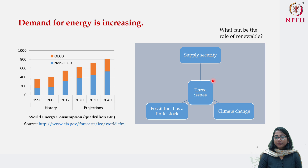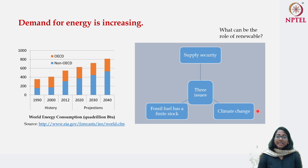The third issue, which you all must be aware of, is climate change. The emissions that come from burning fossil fuel to produce power consist of a lot of greenhouse gases, causing global warming and therefore climate change. If the shift is towards renewables, what has been seen is that if you produce power with renewable energy, the emission of carbon dioxide and other greenhouse gases through the life cycle of renewable energy production is much less compared to what we get from fossil fuels.